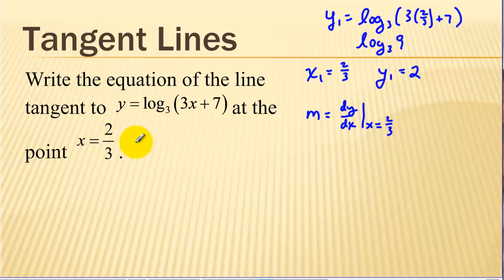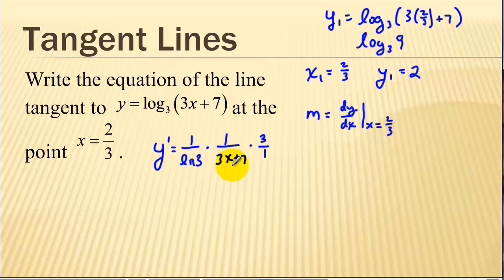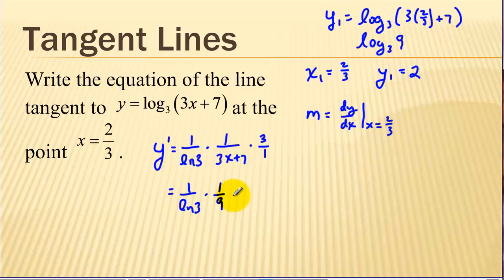Now let's find our slope — we need y prime. Using our rule: 1 over ln of 3 times 1 over u times the derivative of the expression, which is 3. Plugging in 2/3 for x, we get 1 over ln of 3. Earlier we plugged 2/3 into the expression inside the log and got 9, so this becomes 1 over 9 times 3, which makes 1/3. Simplifying, we get 1 over (3 natural log of 3). That is our exact value.